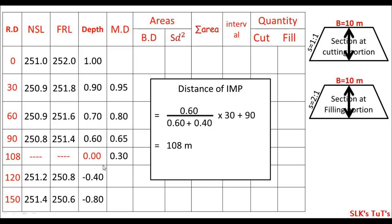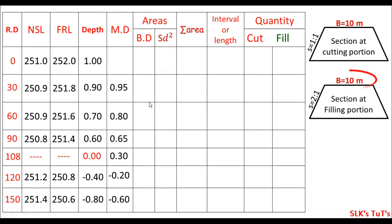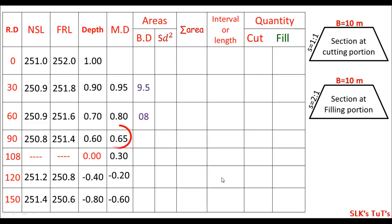Now the mean depth between station 90 and IMP (108): 0.6 plus 0 divided by 2 equals 0.3. Between IMP (108) and station 120: 0 plus 0.4 divided by 2 equals 0.2, which is minus 0.2 because this segment has cutting. And 0.4 plus 0.8 divided by 2 equals 0.6, also negative. Now we calculate the central area, BD. This represents the central or rectangular area: formation width times mean depth. So 10 times 0.95 equals 9.5.